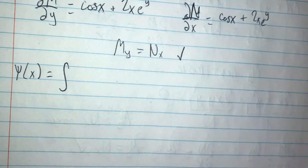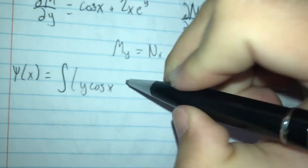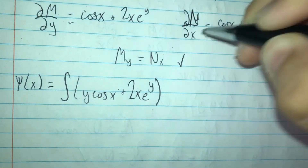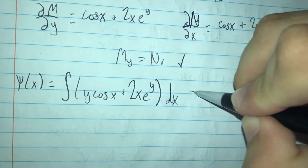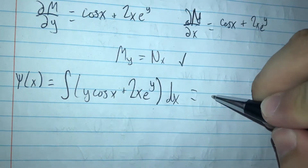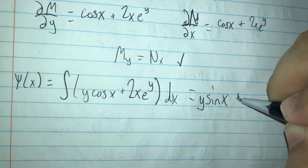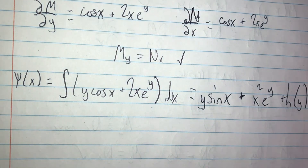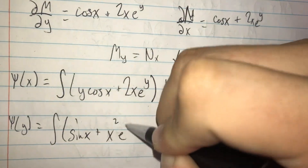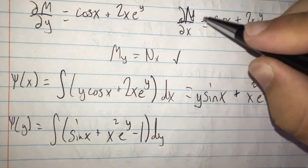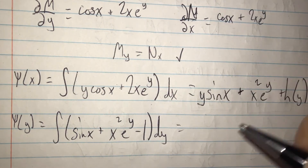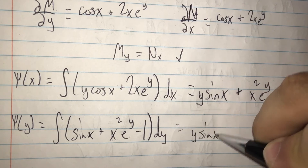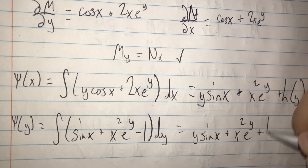We find psi as a function of x by taking the integral of M dx, where M is y·cos(x) + 2x·e^y. Integrating with respect to x gives y·sin(x) + x²·e^y plus some function h(y). Then we find psi as a function of y by taking the integral of N dy, where N is sin(x) + x²·e^y − 1. Integrating with respect to y gives y·sin(x) + x²·e^y plus some function h(x).